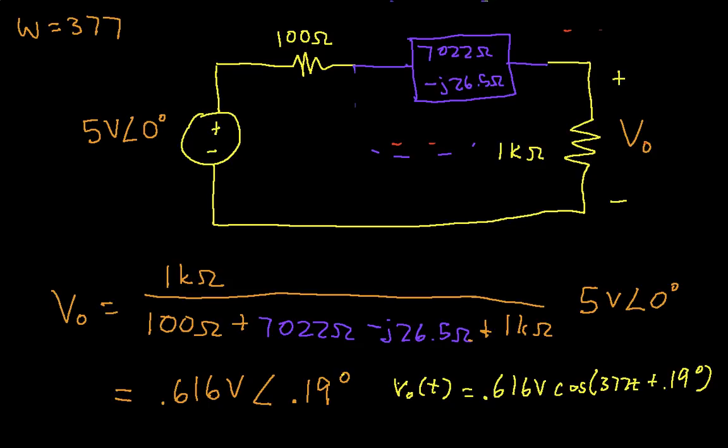This shows that for this angular frequency, omega is 377, which by the way is almost exactly 2π times 60. This corresponds to a frequency of 60 hertz, which if you live in the United States, is the frequency at which power is distributed. You can see that at this frequency, this circuit basically changes the input from about 5 volts down to 0.616 volts. In other words, it significantly attenuates the input.